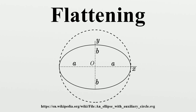The following definitions may be found in standard texts and online web text definitions of flattening. In the following, A is the larger dimension, whereas B is the smaller. All flattenings are zero for a circle.